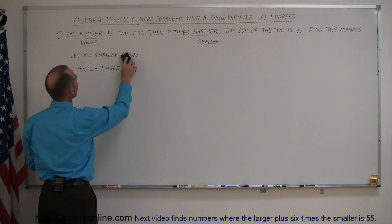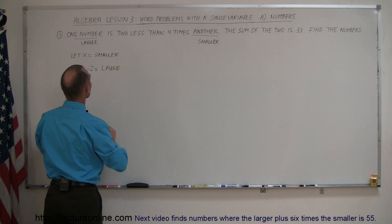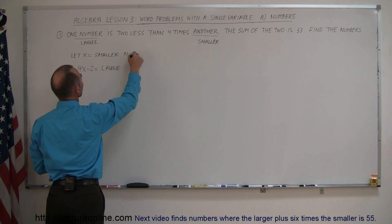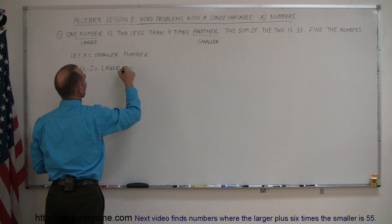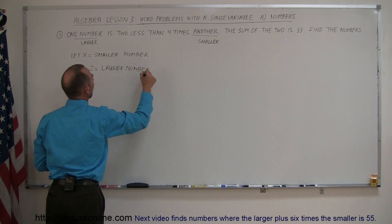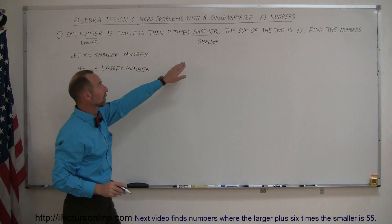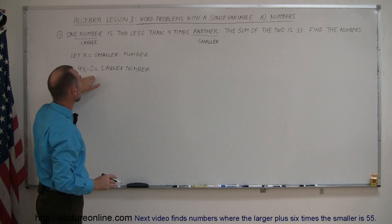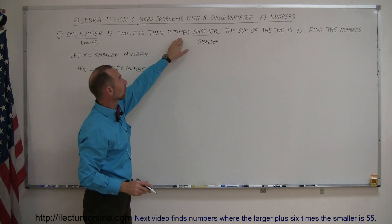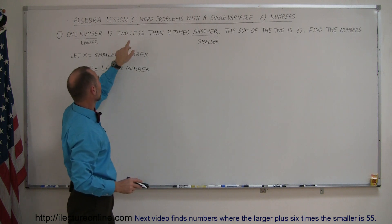Smaller number, that's what I want to write. And here, this is the larger number. Okay, so again, let x be the smaller number, and the larger number is then expressed to be four times the smaller number minus two, right here.